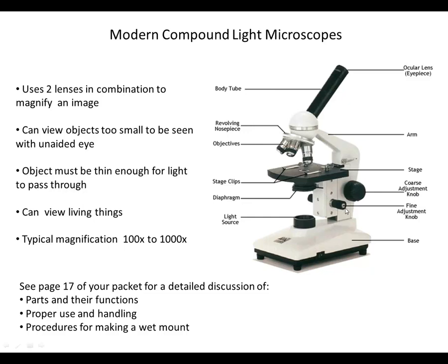The fine adjustment knob, the smaller of the two, is for sharp focus and is typically only used in high power. Conversely, the coarse adjustment knob should only be used in scanning or low power — never in high power, as it makes rapid adjustments and can easily break the lens or slide. The base supports the microscope, and we use one hand on the base and one hand on the arm when moving it. Our modern compound light microscopes have a lamp as the light source. The diaphragm underneath the stage adjusts the amount of light entering the lens system — our microscopes use a disc diaphragm where you change the size of the opening.